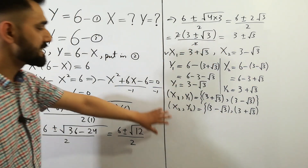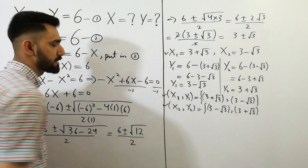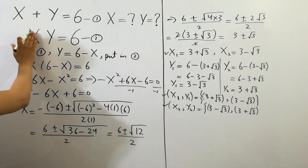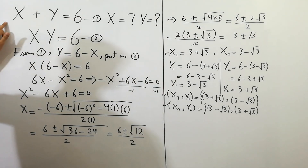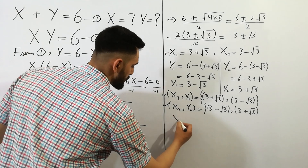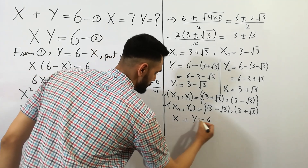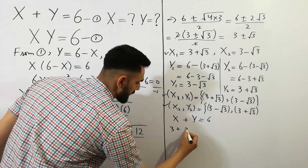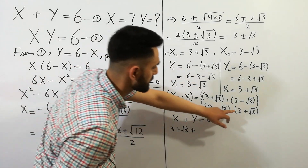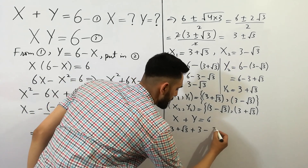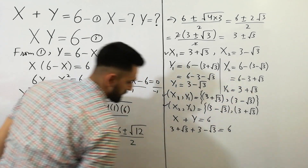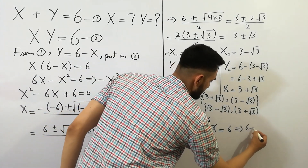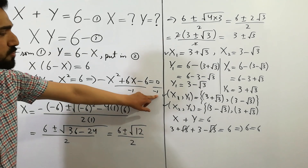Now we check that these values of x1 and y1 are correct. Putting into equation 1: x plus y is equal to (3 plus square root of 3) plus (3 minus square root of 3), which equals 6. We get 6 is equal to 6, which confirms these values of x and y are correct.